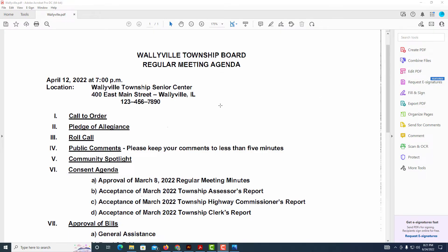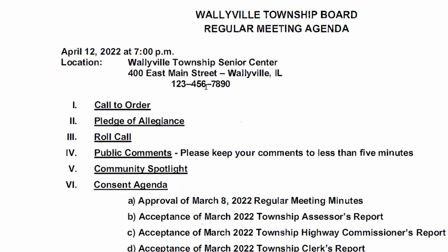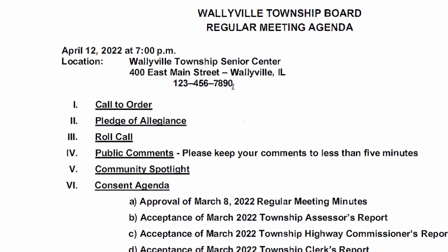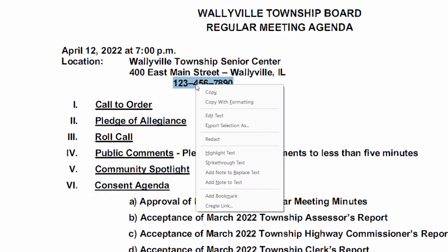I have a PDF opened up here and I'm going to hyperlink this phone number here. The way to do that, you want to highlight the phone number. I'm going to hold down the left mouse button, drag across to where I have the whole phone number highlighted, and then I'm going to right click on it. I'm going to go down to where it says Create Link and click on that.